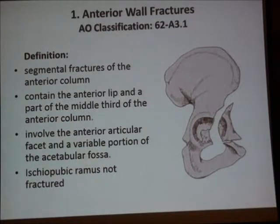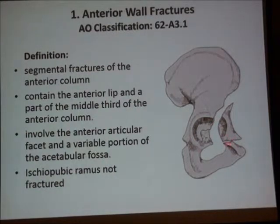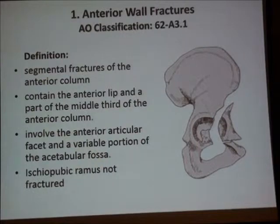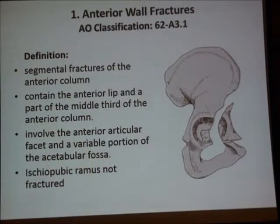We will start with anterior wall fractures. These anterior wall fractures will have two fracture lines. We have disruption of the iliopectineal line at two points in the intermediate segment, which will interrupt the anterior stability of the acetabulum. It will involve part of the articular surface, the articular facet, and a portion of the acetabular floor. However, the ischio-pubic ramus is not fractured.